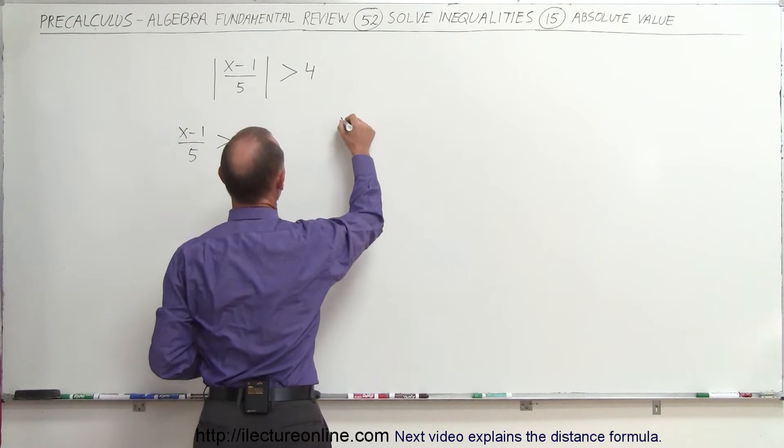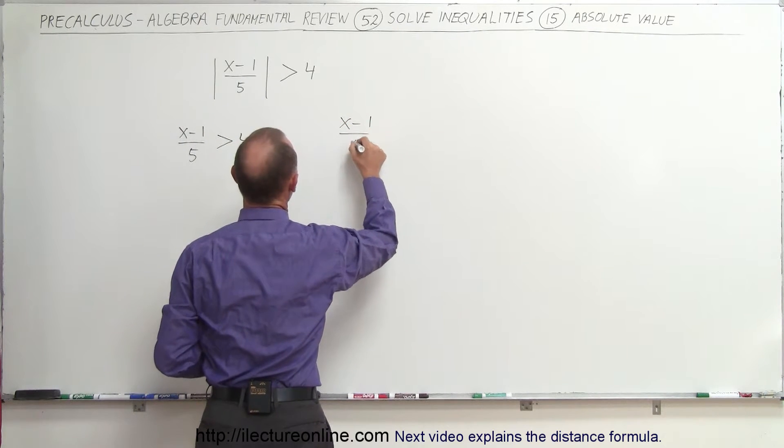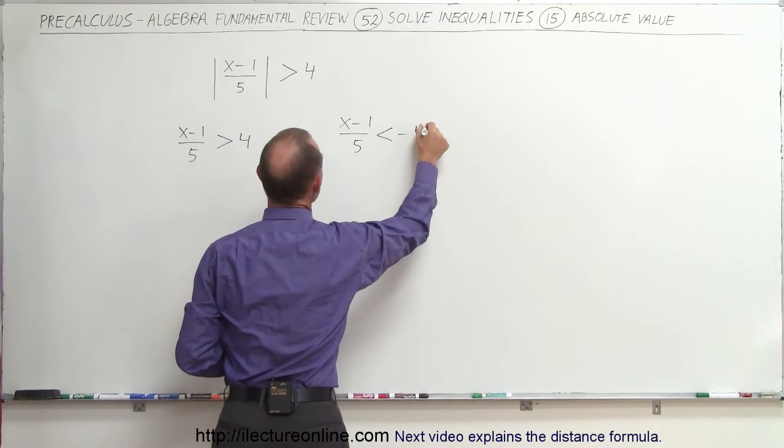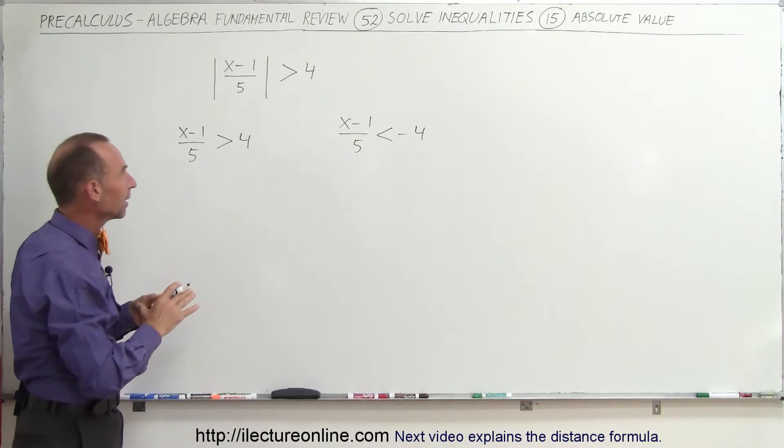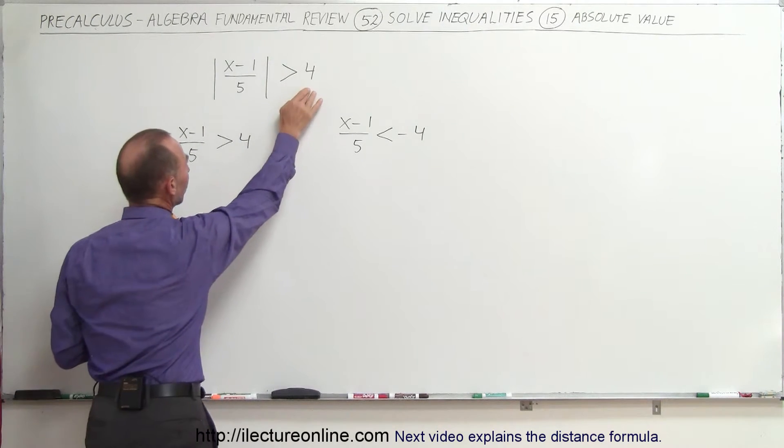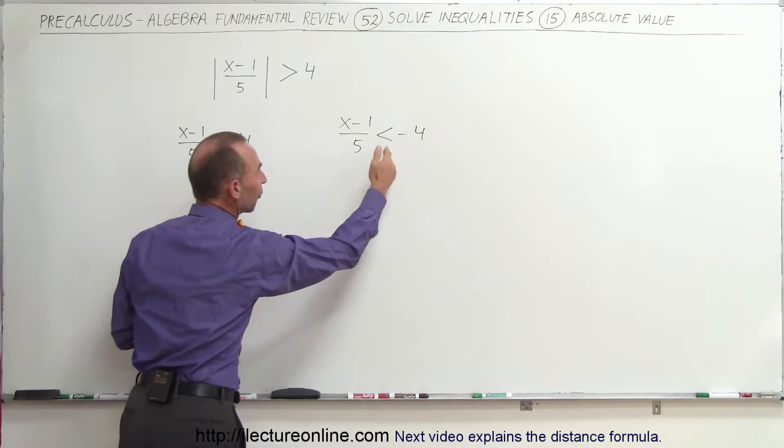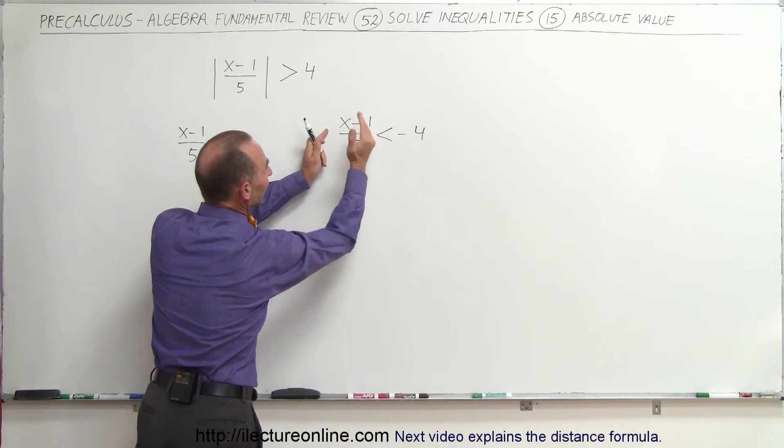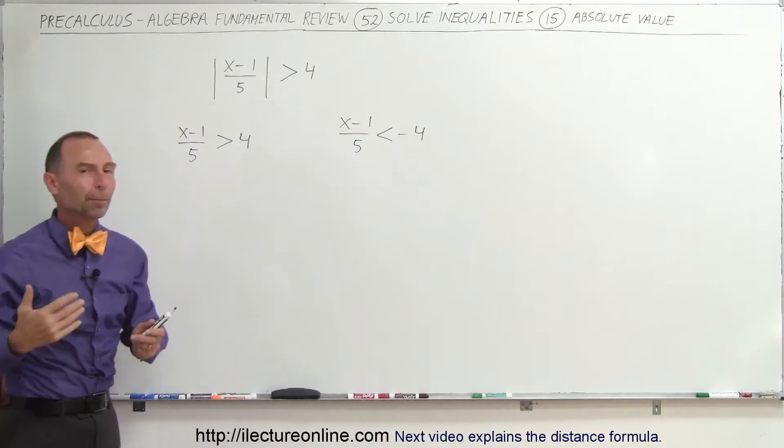In other words, we can also write that x minus 1 divided by 5 is less than negative 4. That allows for both possibilities: one that it's greater than 4 and one that it's less than negative 4, because when we take that absolute value of that, we get again a quantity that is greater than positive 4.